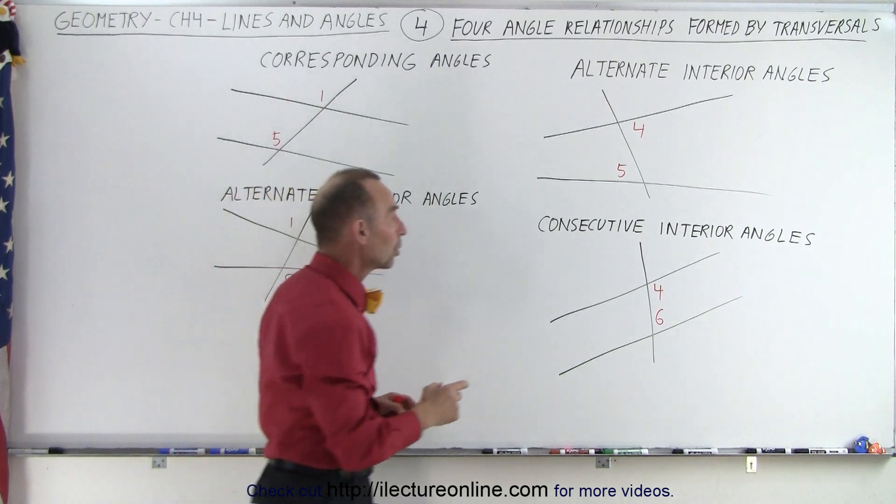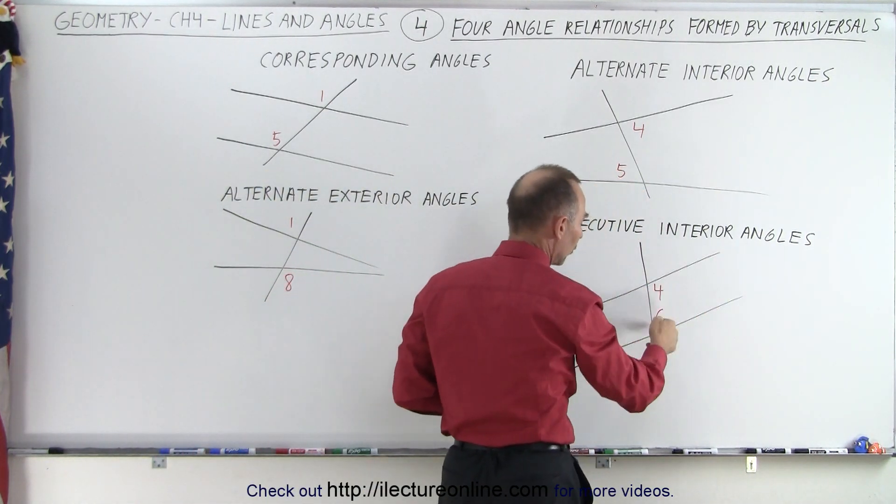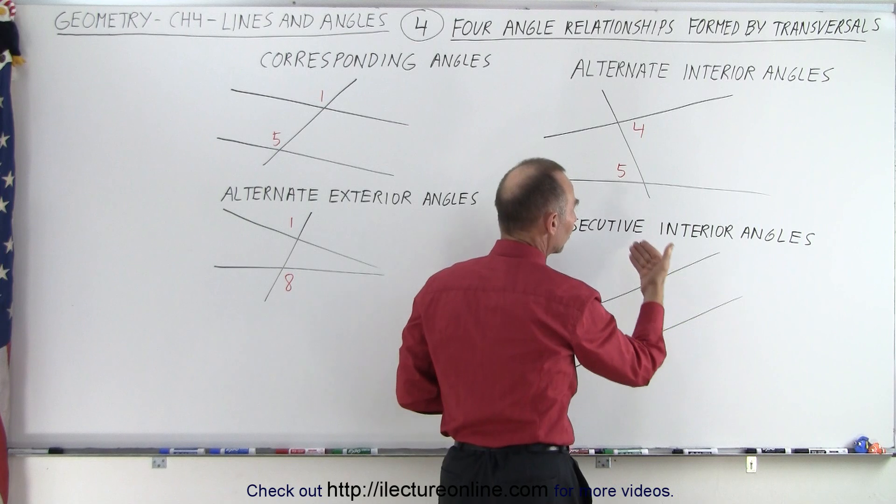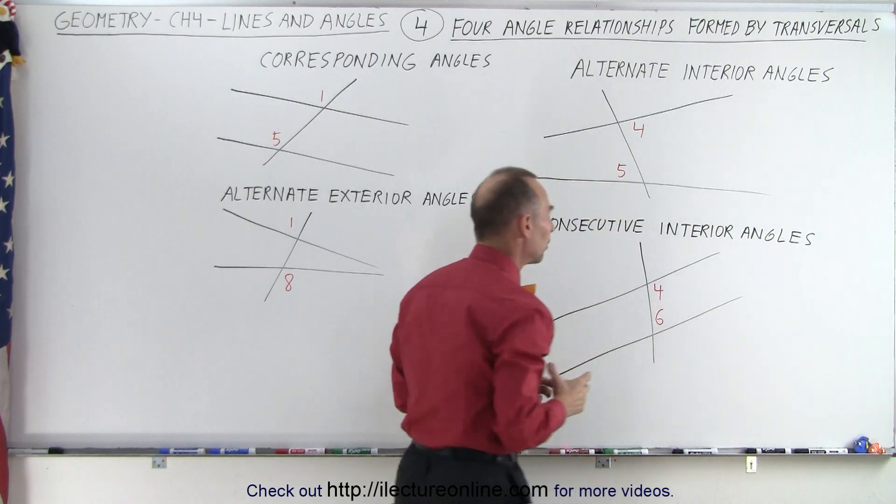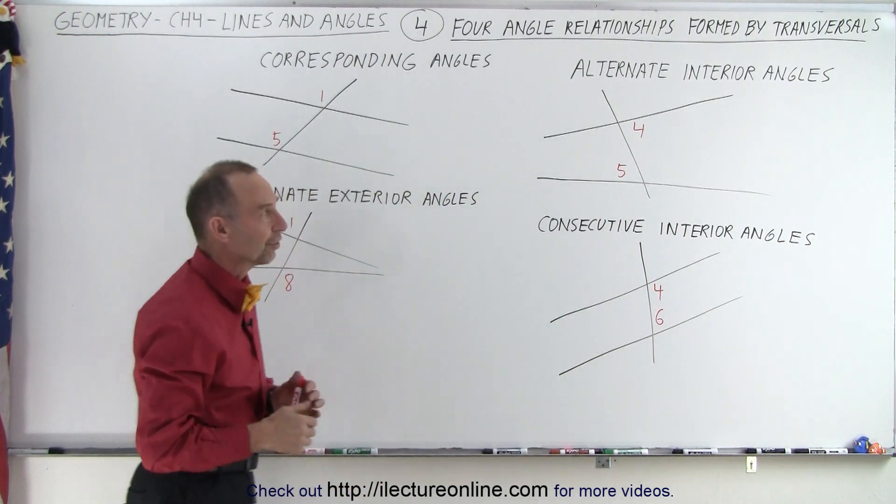And finally, we have what we call consecutive interior angles. So four and six here would be considered consecutive interior angles. Again, interior angles means these angles or these angles. Those are what we call the consecutive interior angles.